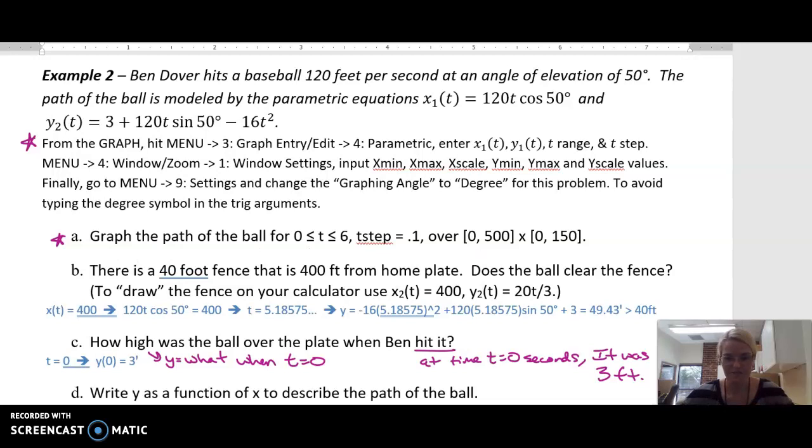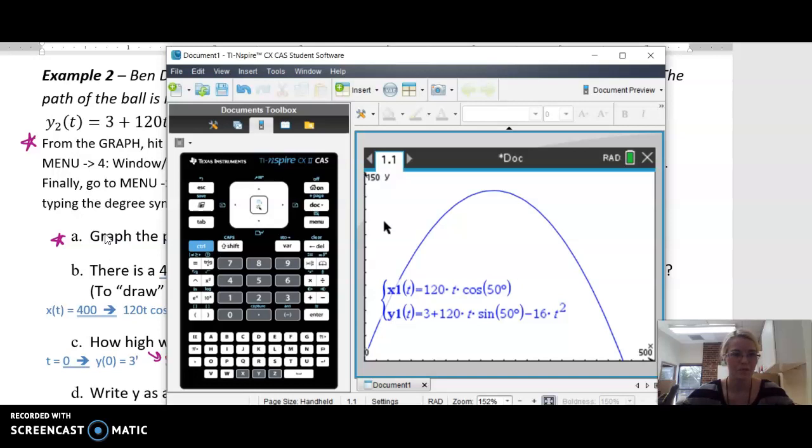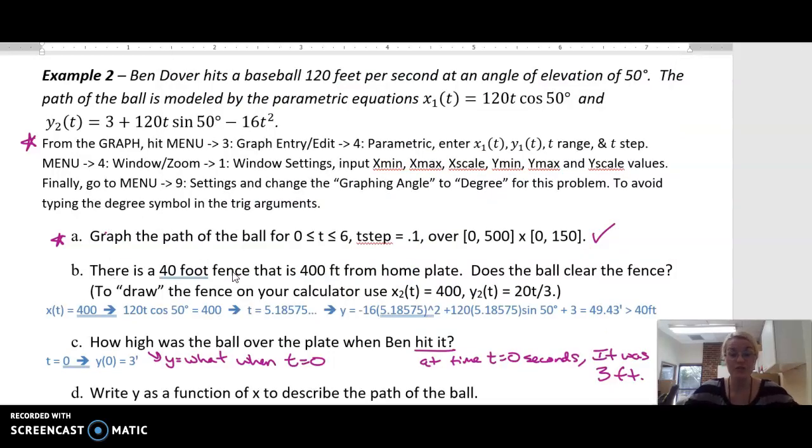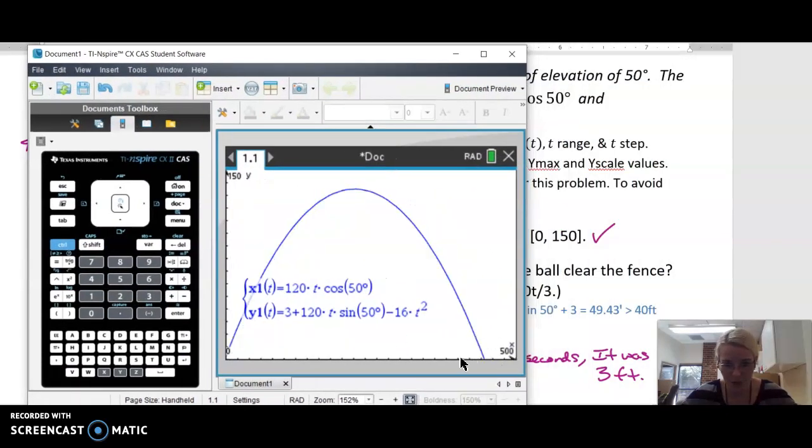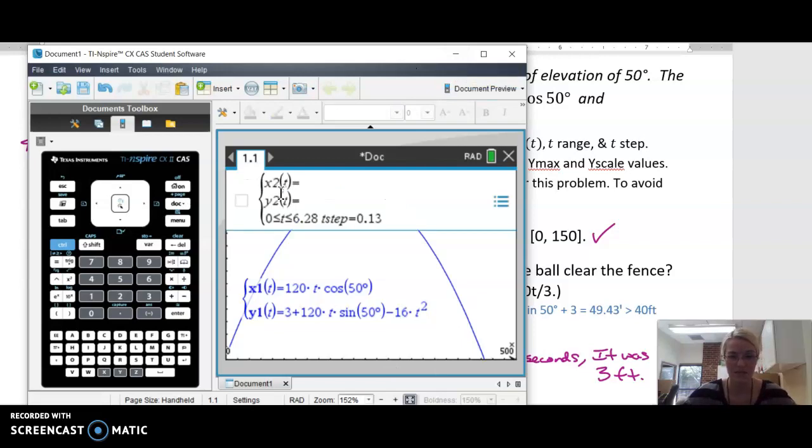The other thing you could have done to avoid typing that degree symbol is you can go to menu settings and change the graphing angle to degree for this problem. Both ways work. We have graphed it. Now there's a 40-foot fence that is 400 feet away from home plate. Does the ball clear the fence? To draw the fence on our calculator, what do we need? We need X is 400 feet away. I just want to know when X is 400, 40 feet up, is that too tall? Does the ball hit the fence or not? I'm going to do a second one. X₂ is constant. No matter what time it is, the fence is always 400 feet away.